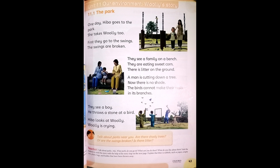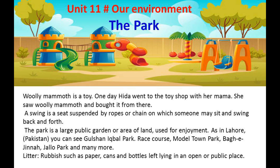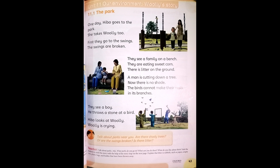First they go to the swings. A swing is a seat suspended by ropes or chain on which someone may sit and swing back and forth. The swings are broken — 'broken' means separated into pieces. When Hiba goes to the swings, she sees that the swings are broken.